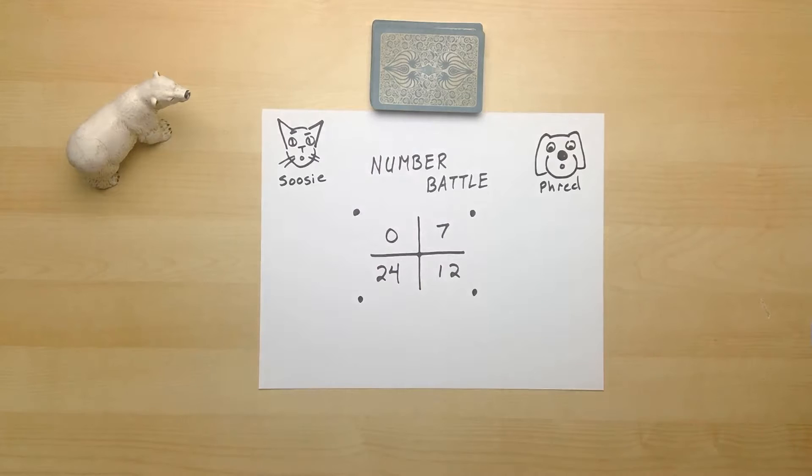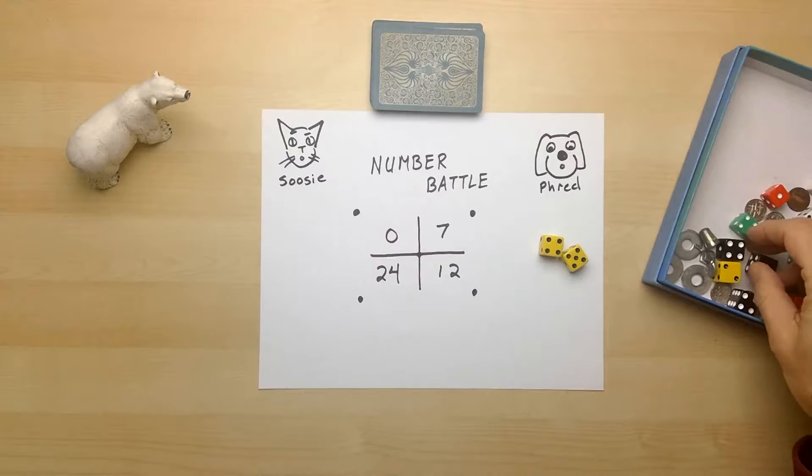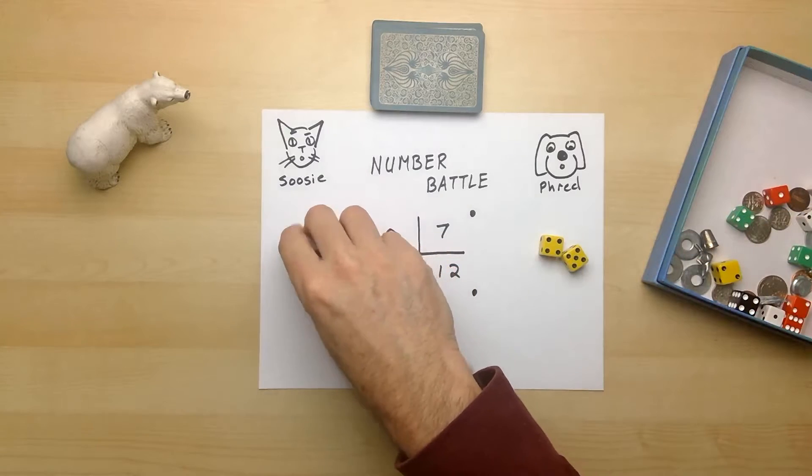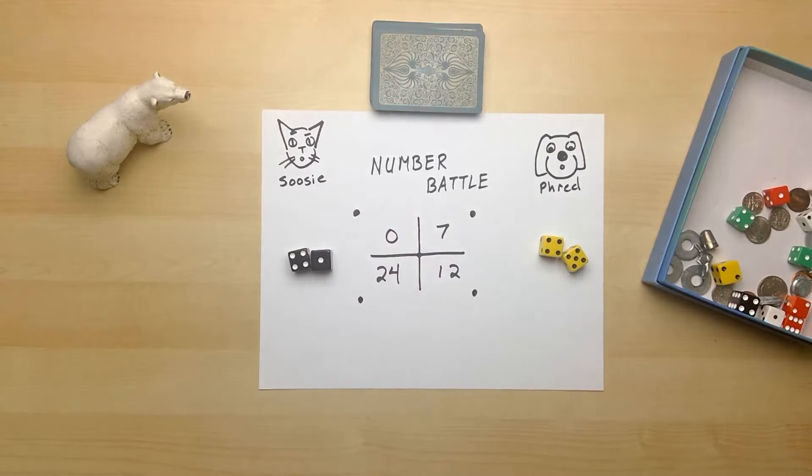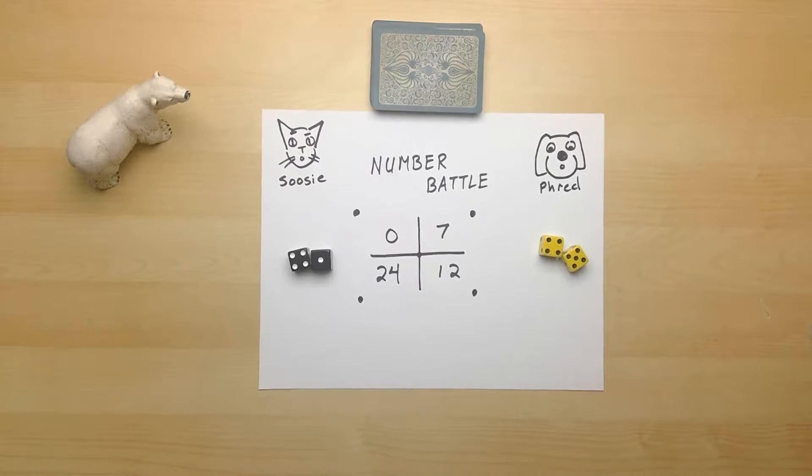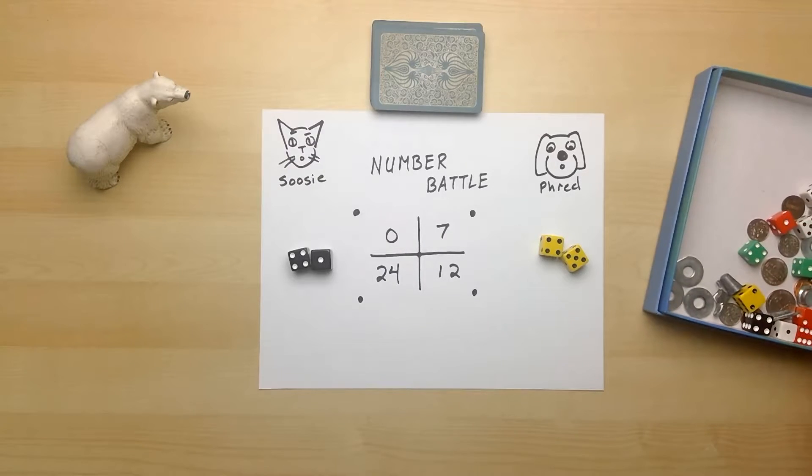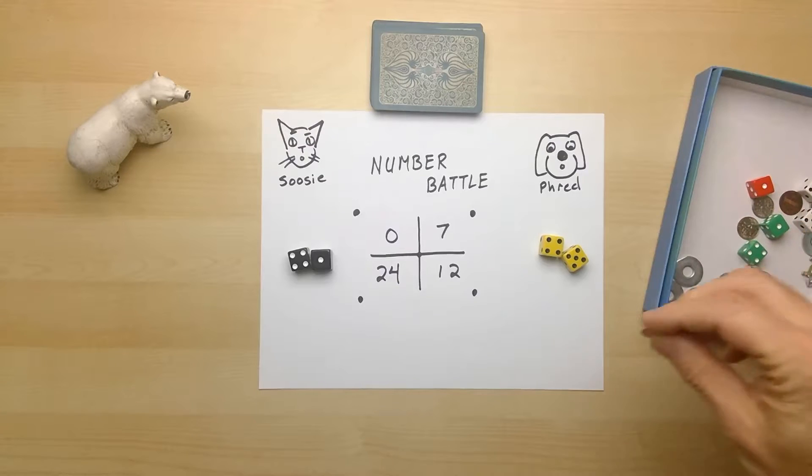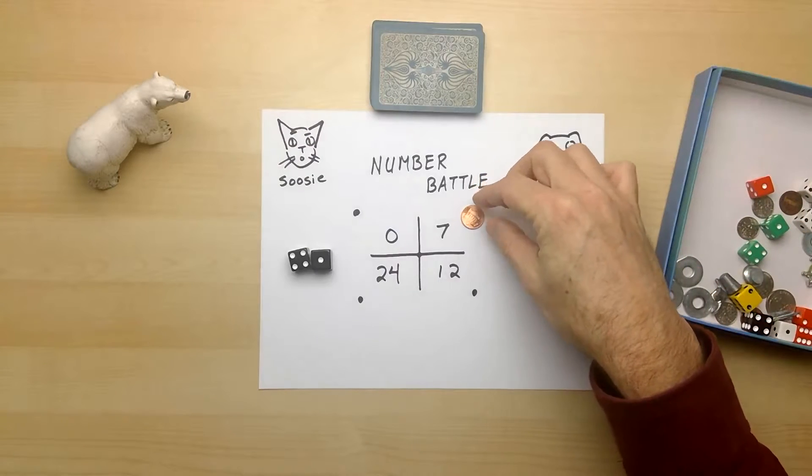The other thing we're going to do is give dice. Let's give Fred some dice. And let's give Susie some dice as well. If you only have one pair of dice, you can share between the two of you. But if you have two sets of dice, that works out really well too. So let's put this aside. And now we're ready to play the number battle. Let's take a shiny coin and put it on the number seven.